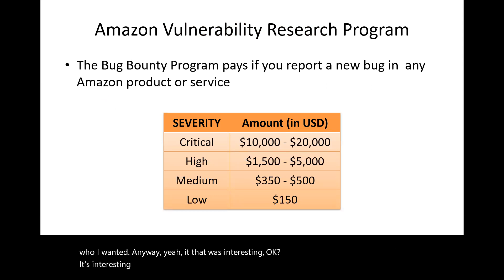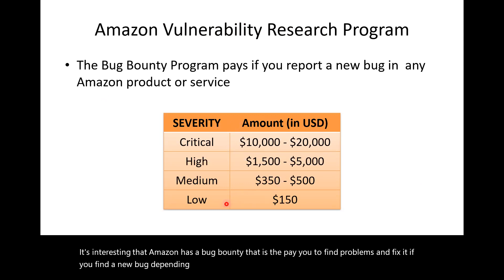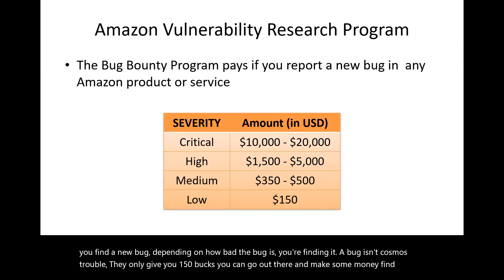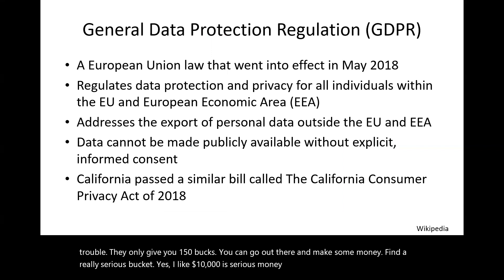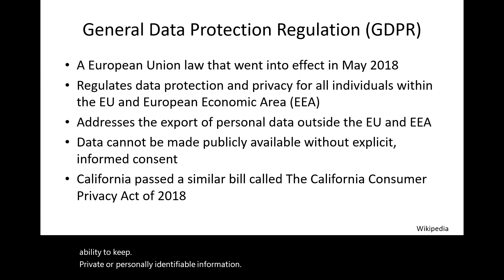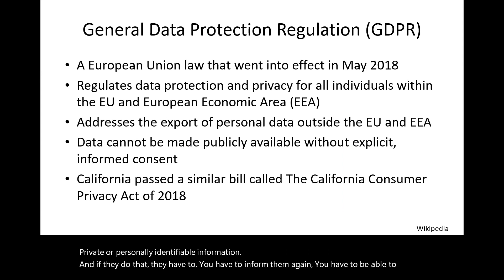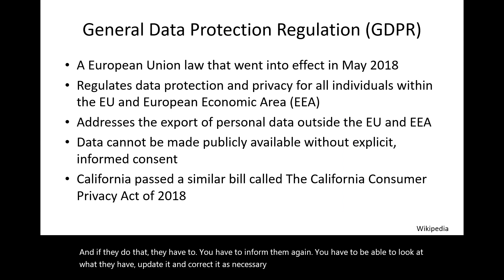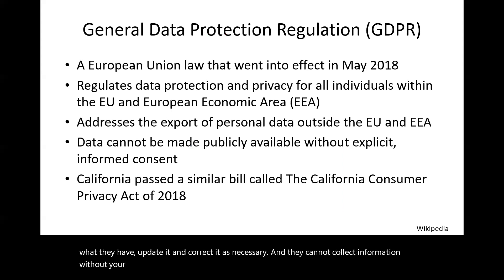Amazon has a bug bounty program — they'll pay you to find security problems. Depending on severity, you might get $150 for a minor bug or up to $10,000 for a serious one. The European Union's General Data Protection Regulation, GDPR, addresses companies' ability to collect personally identifiable information. If they do, they must inform you, you must be able to view and update what they have, and they cannot collect information without your explicit permission.